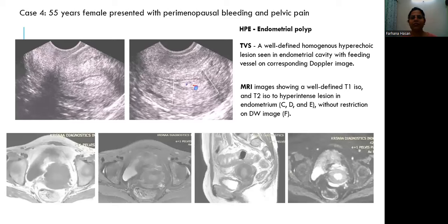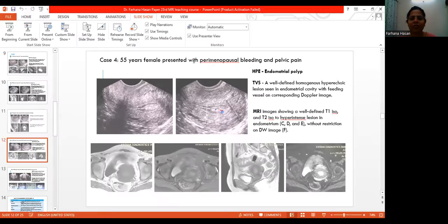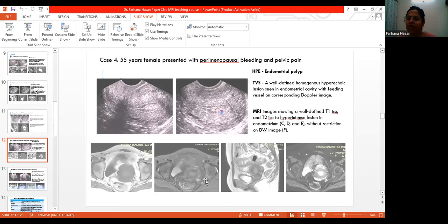Case 4: a 55-year-old woman presented with perimenopausal bleeding and pelvic pain. On TDS, a well-defined homogeneous hyperechoic lesion is seen in the endometrial cavity with a feeding vessel on the corresponding Doppler. On MRI, we have a well-defined T1 iso, T2 iso-to-hyperintense lesion in the endometrium without restriction on DWI images. An endometrial polyp was diagnosed on histopathological examination.